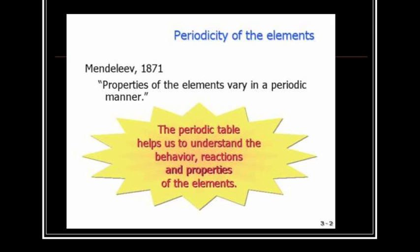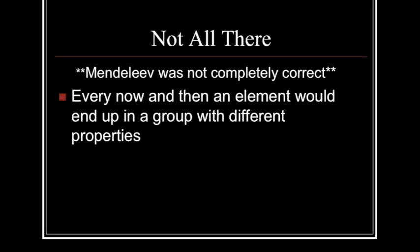Why is it so important that we have the Periodic Table? Well, the Periodic Table helps us to understand the behavior, the reactions, and the properties of elements. It gives us an idea of how elements are going to react — it gives us a road map for the elements. Now, Mendeleev wasn't completely correct. He wasn't 100% right. Later, they discovered that even some elements that were in certain groups on the Periodic Table would have different properties.